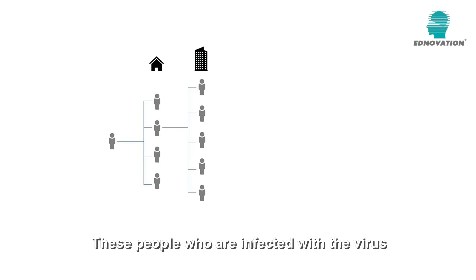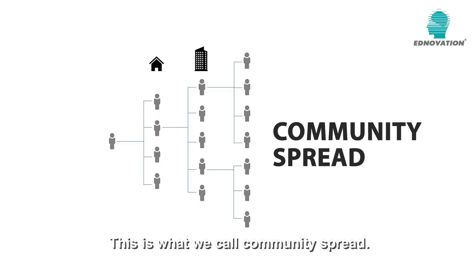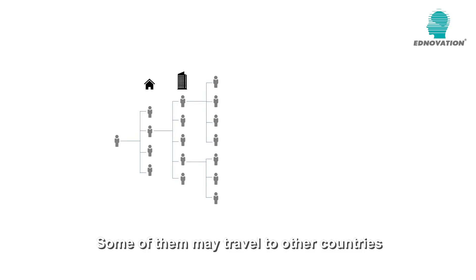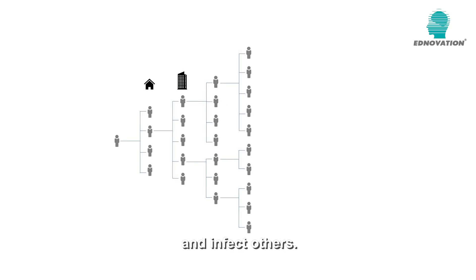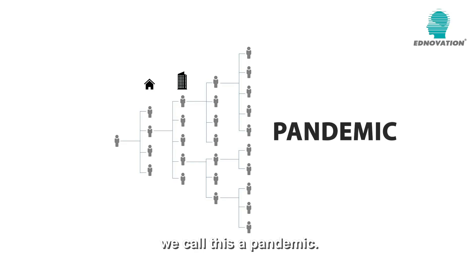These people who are infected with the virus will go on to infect others. This is what we call community spread. Some of them may travel to other countries and infect others. When many people all over the world fall sick with the same virus, we call this a pandemic.